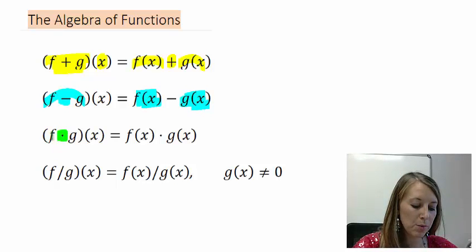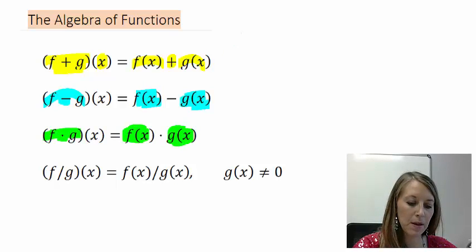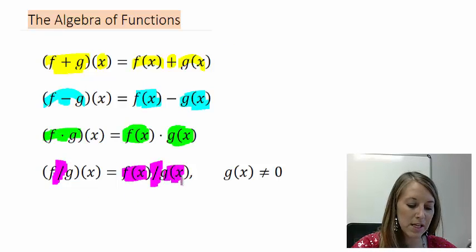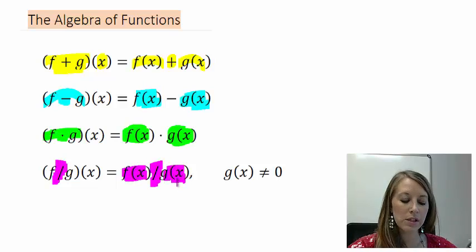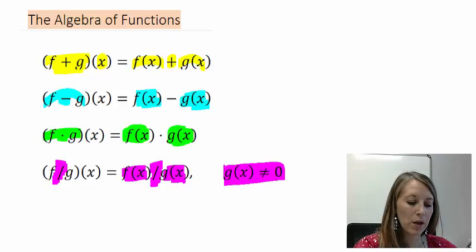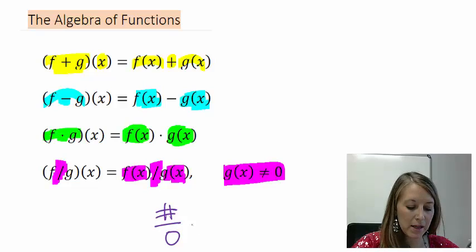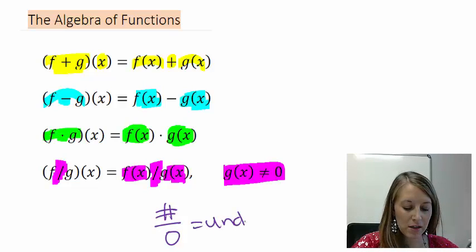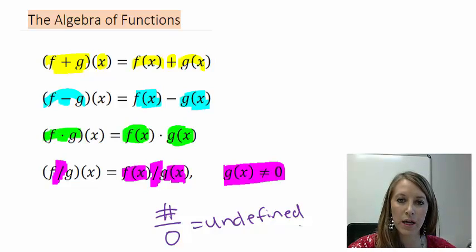If we want to multiply the two functions, we can just multiply them separately. And if we want to divide the two functions, we just divide them separately. That last one has an extra stipulation: your denominator function cannot be zero, because anything divided by zero is undefined. So we just have to make sure that your denominator doesn't work out to be zero.